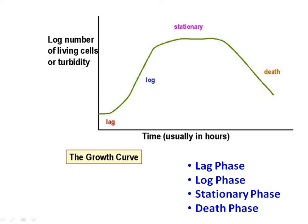The biomass and cell number produced during this phase depends largely on the initial substrate concentration and on the organism's growth yield. This is the mass of cells produced per unit of substrate converted, and is often related to the efficiency of growth on a particular substrate. It is therefore of importance in industrial processes where the objective is to produce biomass as cheaply as possible.